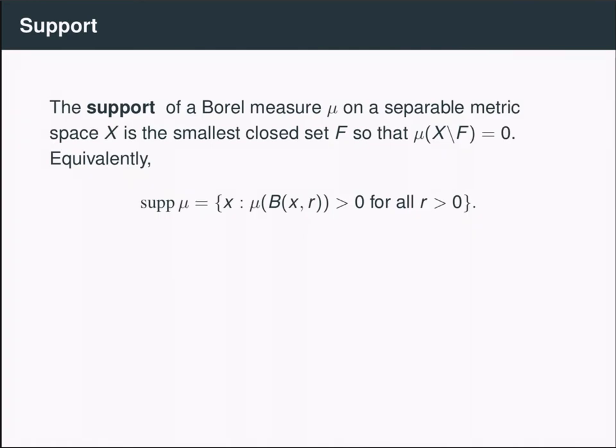Now when a measure is defined on a topological space, there's an important concept called the support of the measure. This is defined to be the smallest closed set whose complement has measure zero. Now again, we're primarily going to be working in separable metric spaces. So this definition is actually equivalent to the set of points where the measure of any ball centered at that point has positive measure. So the support, heuristically, is just supposed to tell you where the function exists and where it's concentrated.